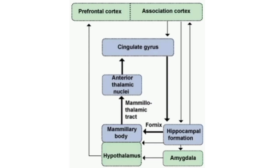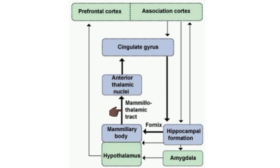We also have the Papez circuit, which refers to the interconnections between various structures of the limbic system forming a complex of closed circuits. The hippocampus is connected to the mammillary bodies of the hypothalamus via the fornix. The mammillary bodies are connected to the anterior thalamic nucleus via the mammillothalamic tract. The anterior thalamic nucleus projects into the cingulate gyrus, which is in turn connected back to the hippocampus.